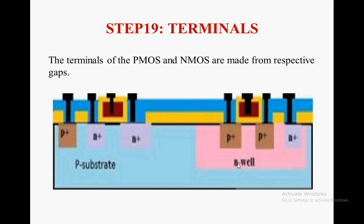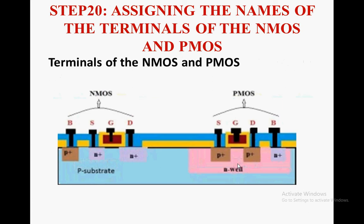The terminals of PMOS and NMOS are made from their respective gaps. As you can see, for NMOS: this is the body terminal, this is the source terminal, this is the gate terminal, and this is the drain terminal. For PMOS: this is the source, this is the gate terminal, this is the drain terminal, and this is the body terminal. The source and drain terminals of PMOS are P+, and the body terminal contact is N+. The P-substrate and N-well are created by ion implantation using trivalent impurities for the N-well and pentavalent impurities such as arsenic for creating NMOS.